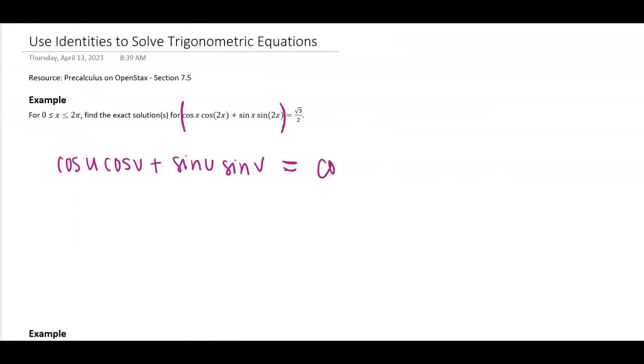So this is going to be cosine of u minus v, where in this case I'm saying u equals x and v equals 2x. So that would be the cosine of x minus 2x equals square root of 3 over 2. Well, I could combine like terms in here.